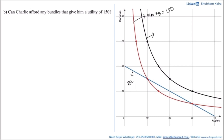The black indifference curve gave Charlie the utility of 300, which had the equation xa multiplied by xb equal to 300. Now the question says: can Charlie afford any bundles that give him the utility of 150? For Charlie to afford any bundle, that bundle should lie either on his budget line or below his budget line. Secondly, we want the utility to be 150, so the chosen consumption bundle should lie on the red indifference curve.